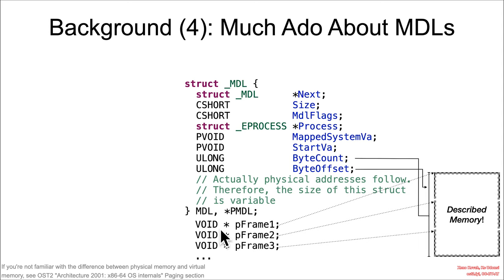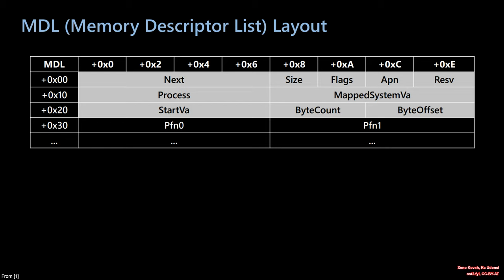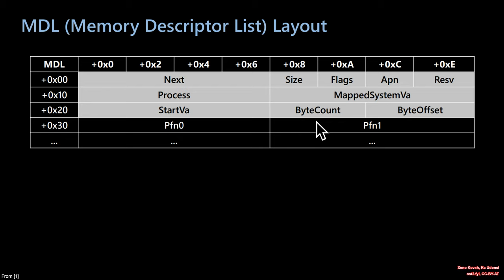The MDL has this structure as essentially a header, a variable-sized array of frames — however many hex 1000 chunks are needed to describe the MDL. In struct form, you have the next pointer at the beginning — eight bytes on a 64-bit architecture — two-byte size, two-byte flags, and so on. After that fixed-size structure comes the variable-length array of what are called page frame numbers, or PFNs: PFN0, PFN1, et cetera. These are addresses of physical frames of physical memory, as opposed to virtual memory.